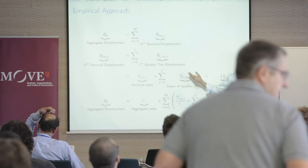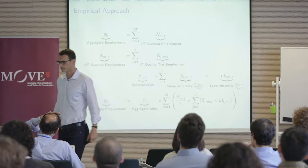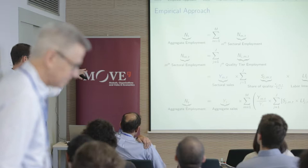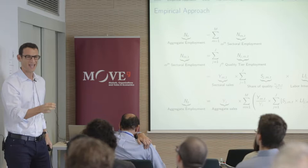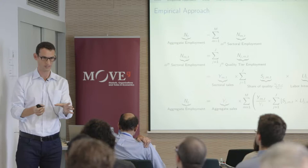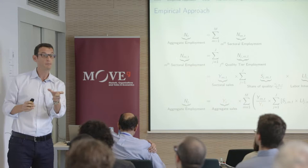On whether to use number of workers or wage payments: we use number of workers because of data constraints. CompuStat does not report wages for the majority of firms — only about a quarter of firms have wage information. For the subsample of the 25% that actually report wages, you could redo everything and get the same result.